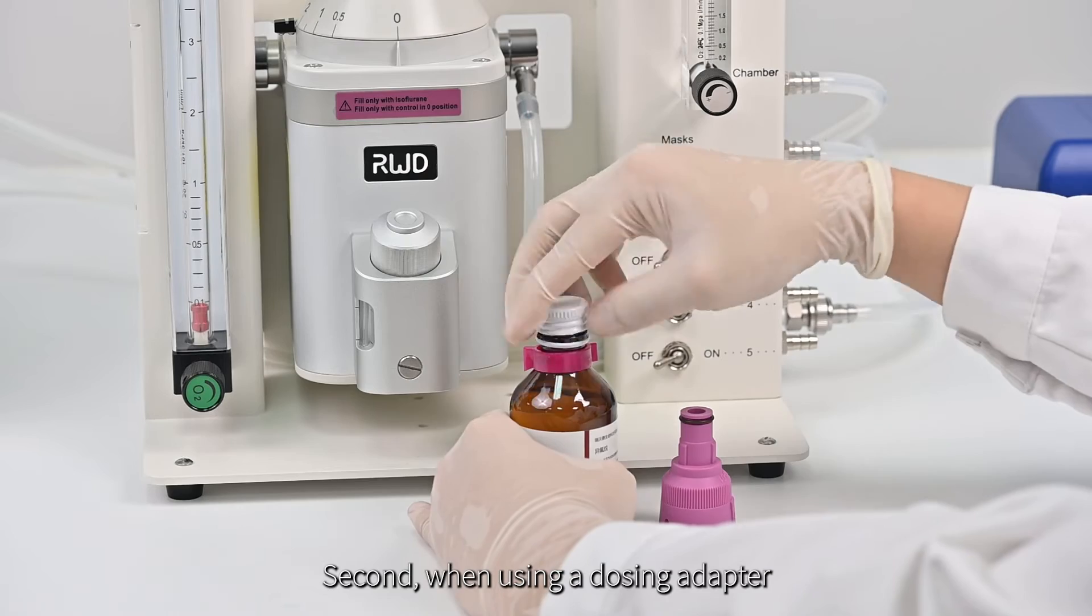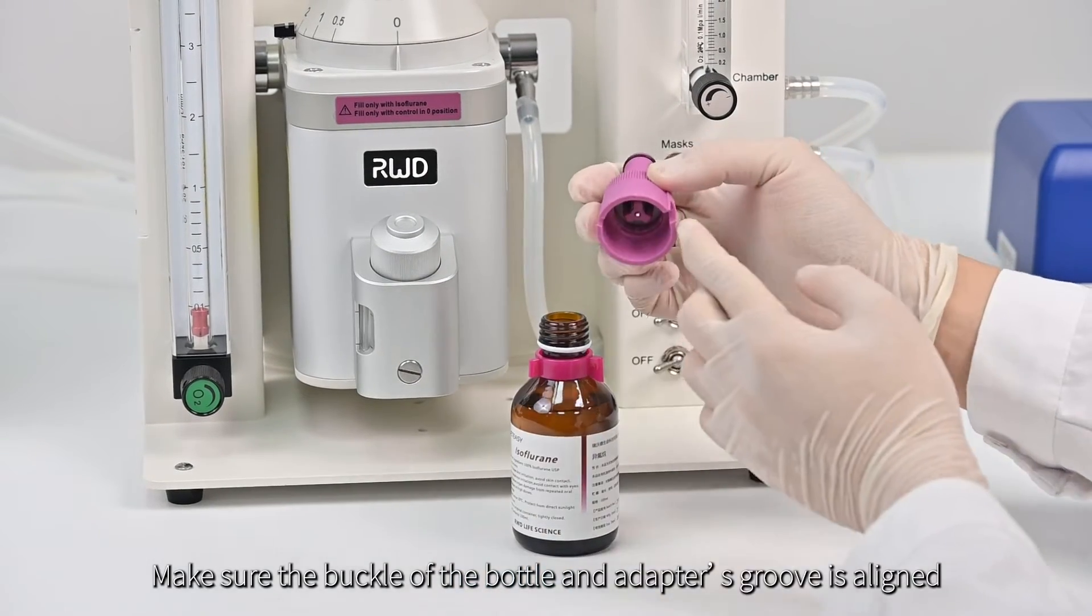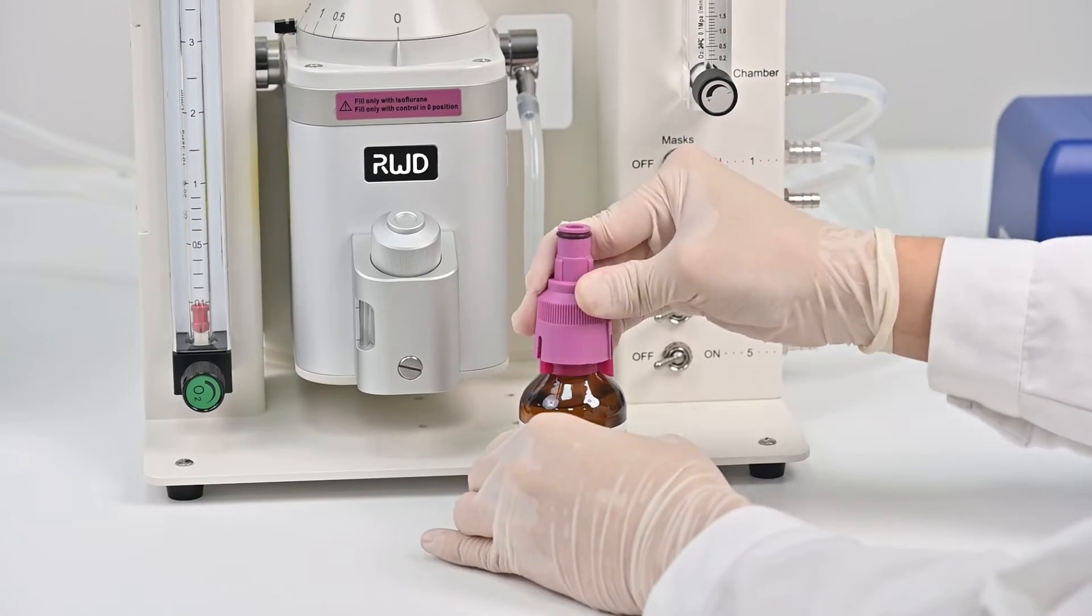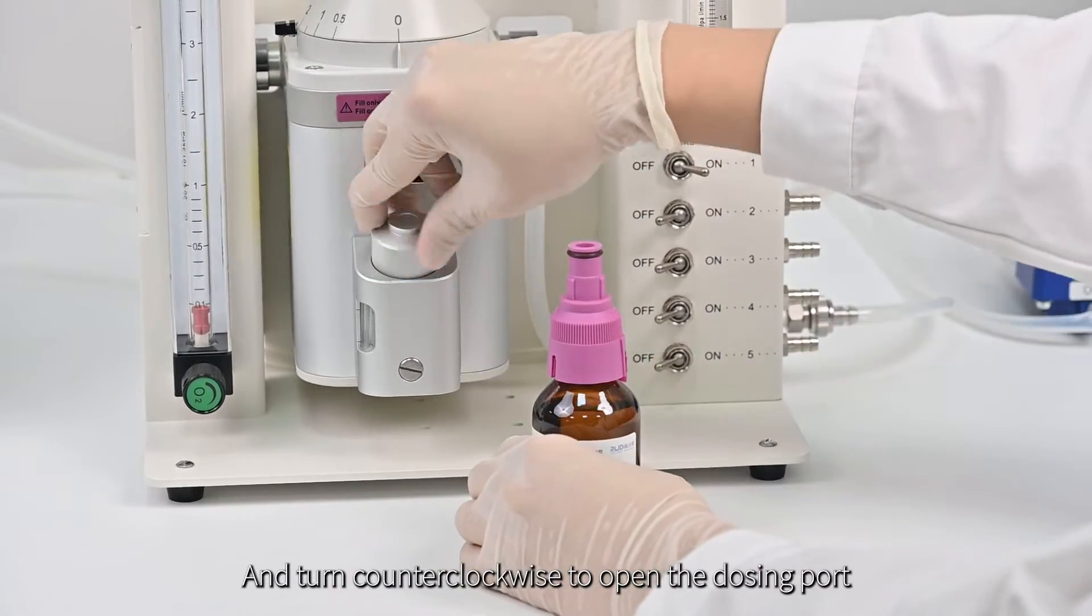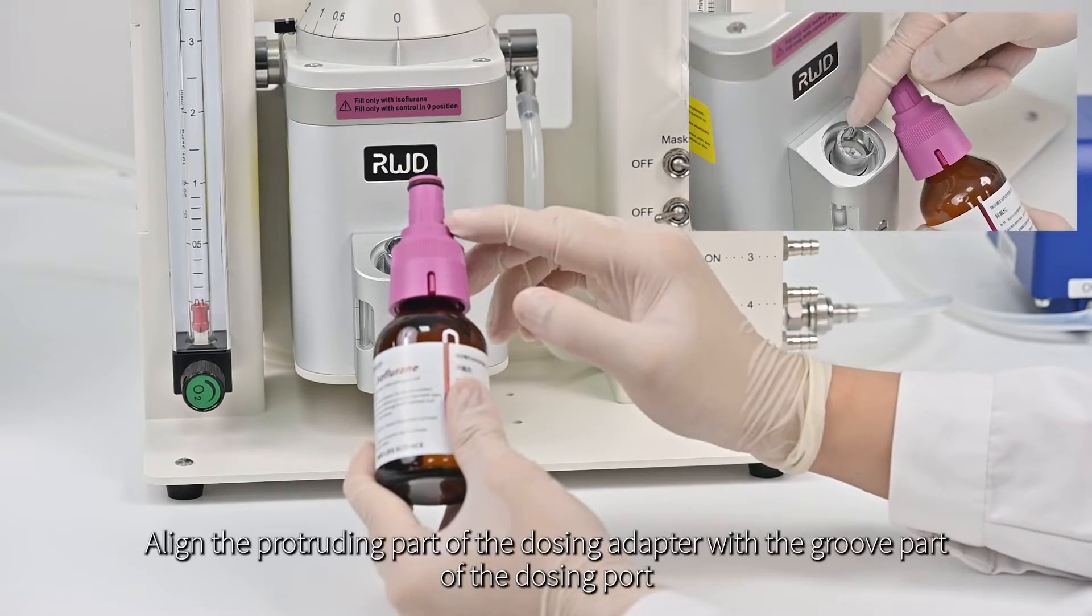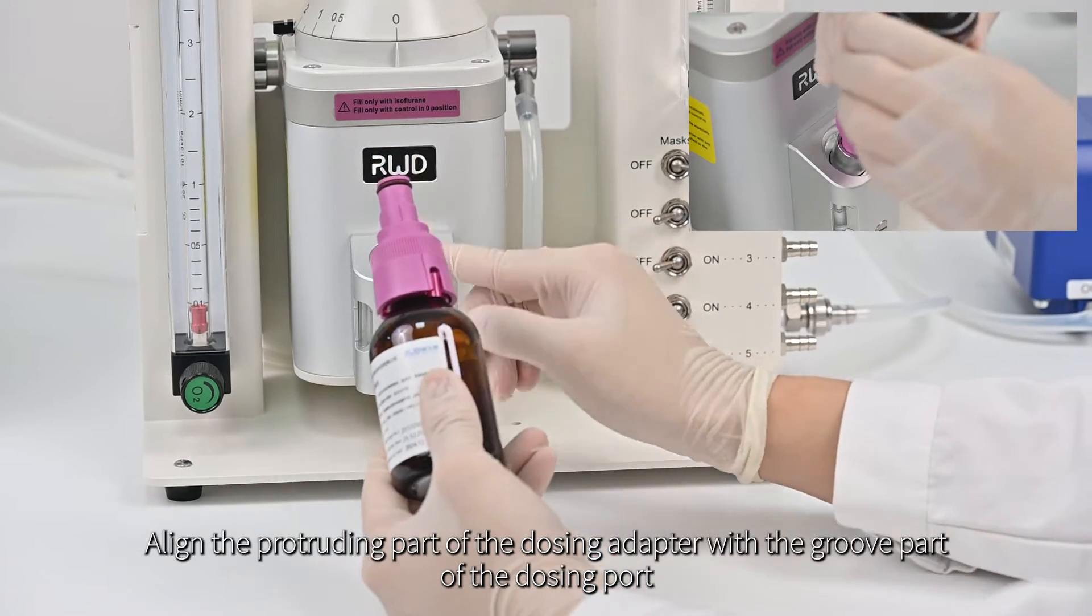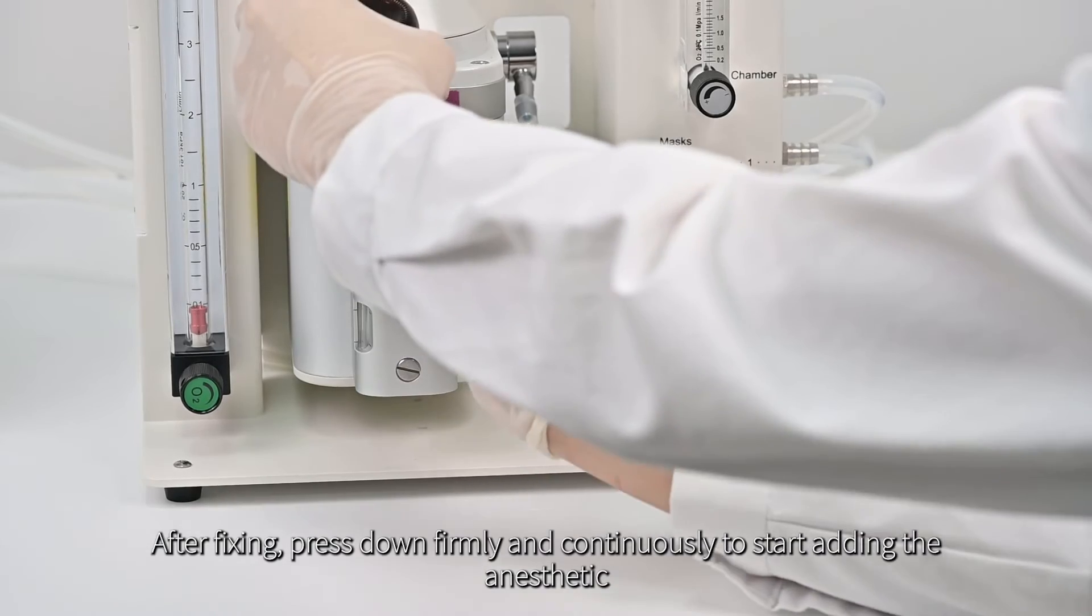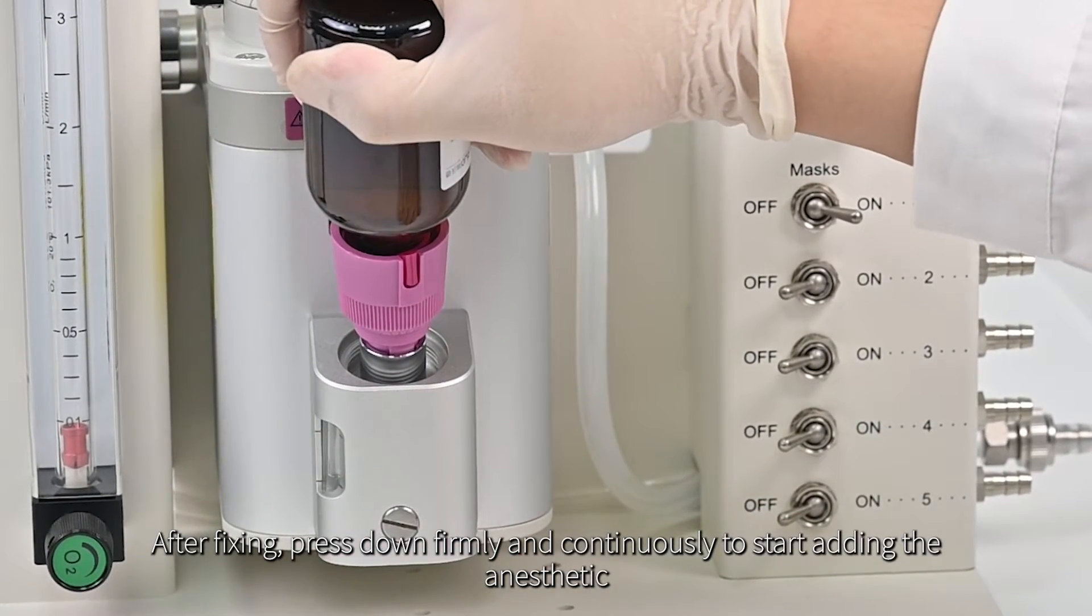Second, when using a dosing adapter, make sure the buckle of the bottle and adapter's groove is aligned. Rotate the adapter to secure it, and turn counterclockwise to open the dosing port. Align the protruding part of the dosing adapter with the groove part of the dosing port. After fixing, press down firmly and continuously to start adding the anesthetic.